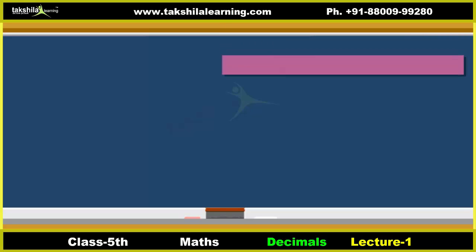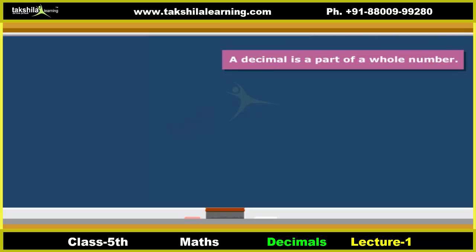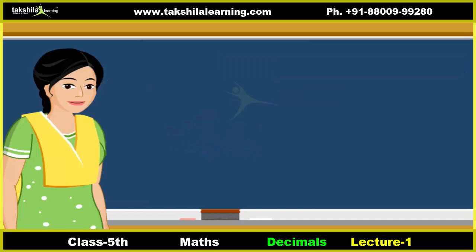Basically, a decimal is a part of a whole number. Look, the fraction 5/10 could be written as 0.5. You can easily identify a decimal by looking at the decimal point.